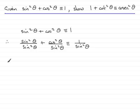Now sin squared theta divided by sin squared theta is 1, and cos squared theta divided by sin squared theta is cot squared theta, and 1 over sin squared theta is defined as cosec squared theta. And so nice easy question that.